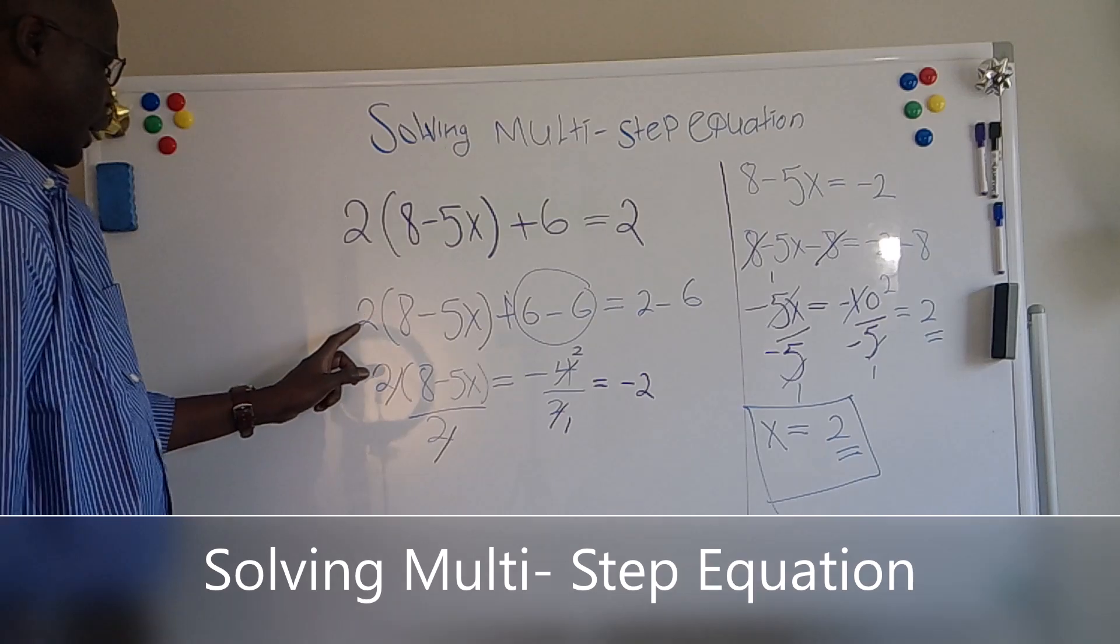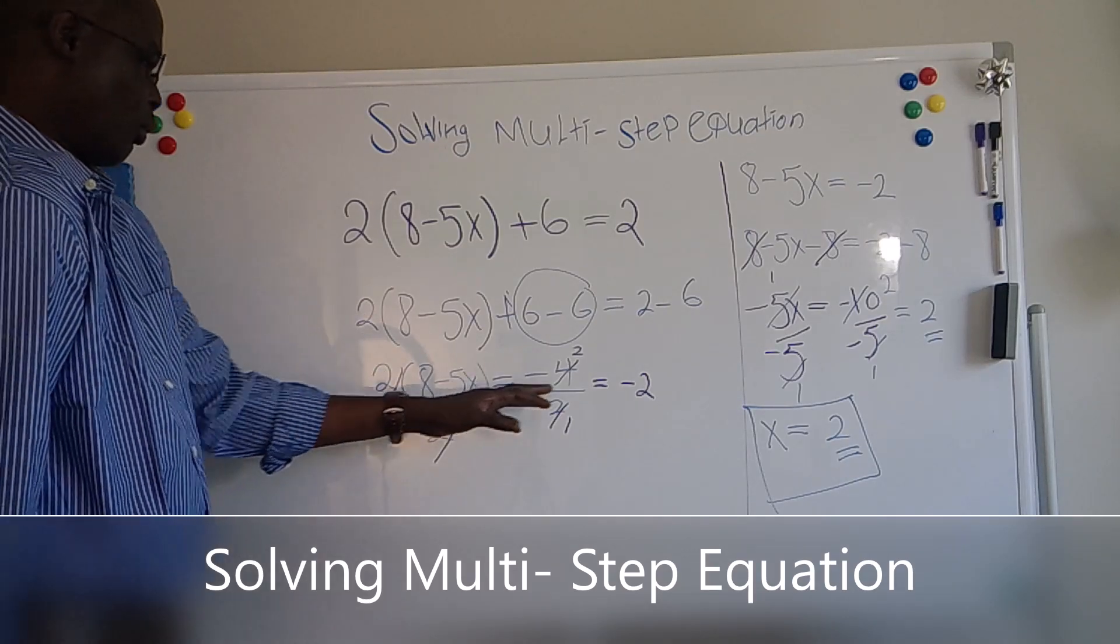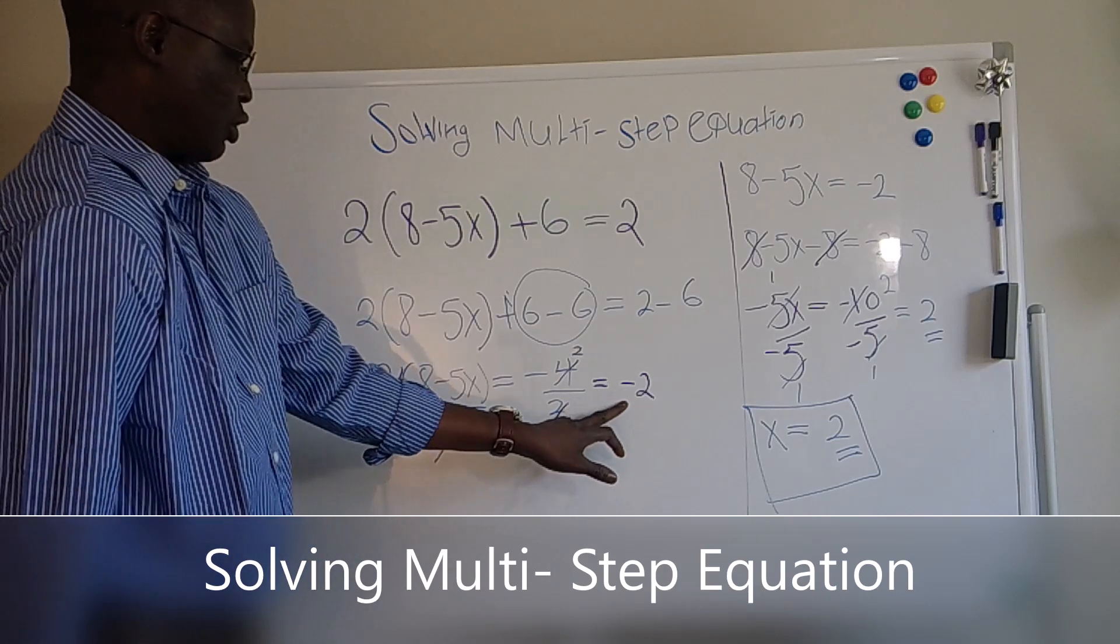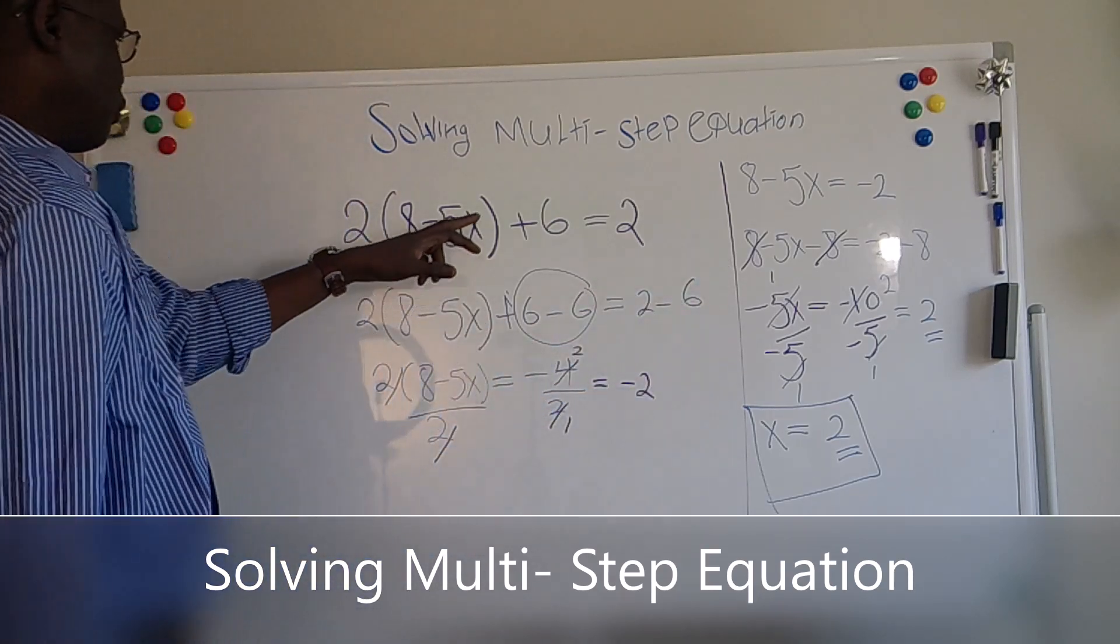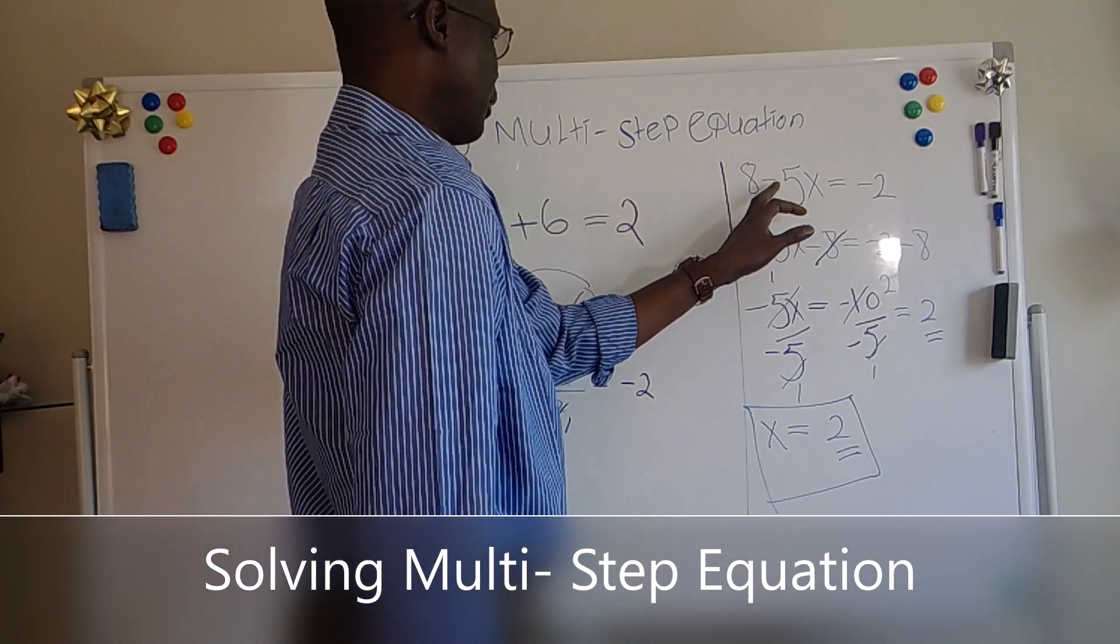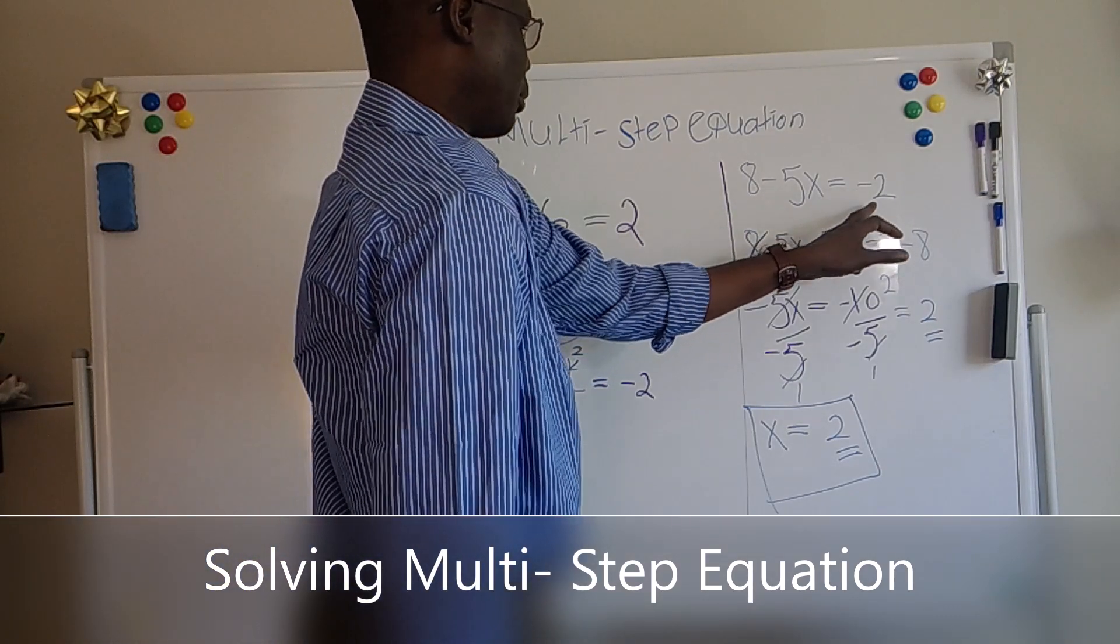And then we went back and take the 2, we divide it to the whole side of the equation. We got minus 2. Here we became, so we took this off. We can have 8 minus 5X equal to minus 2.